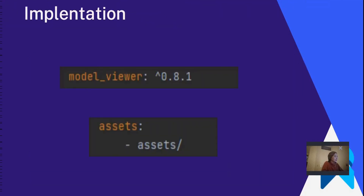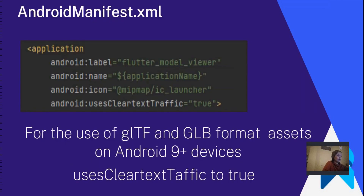For the implementation of the Model Viewer, add the package to pubspec and add the assets. For using GLTF and GLB format assets on Android 9+ devices, you should go to AndroidManifest.xml and set usesCleartextTraffic to true. In order to view remote documents from an HTTP URL, cleartext network traffic support is required on Android 9 API level 28 or higher. Cleartext support is disabled by default, and apps targeting Android 9 or higher need to add usesCleartextTraffic true. If you're only working with HTTPS files, this is not required.